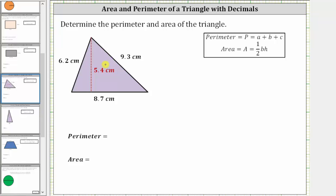So if we think about walking around the triangle starting here, the perimeter is 6.2 centimeters plus 9.3 centimeters plus 8.7 centimeters.